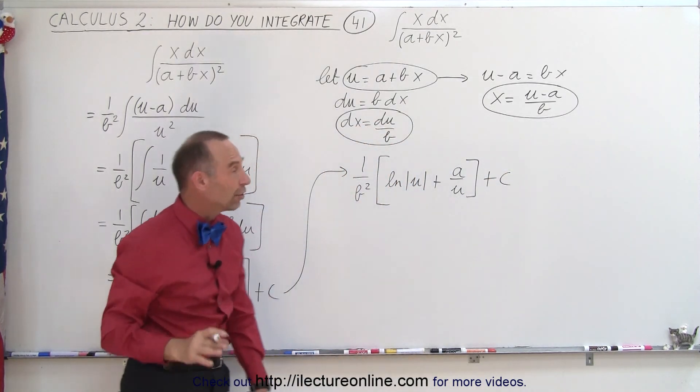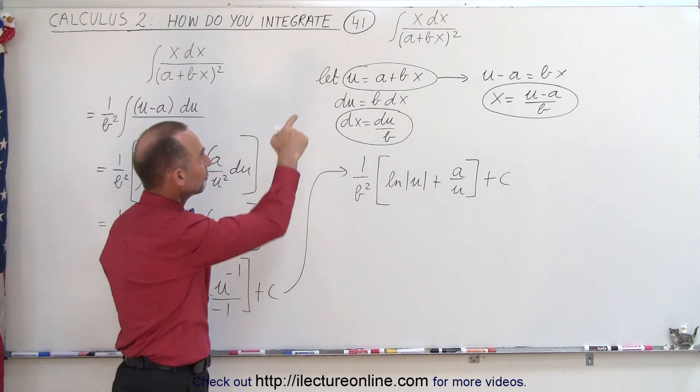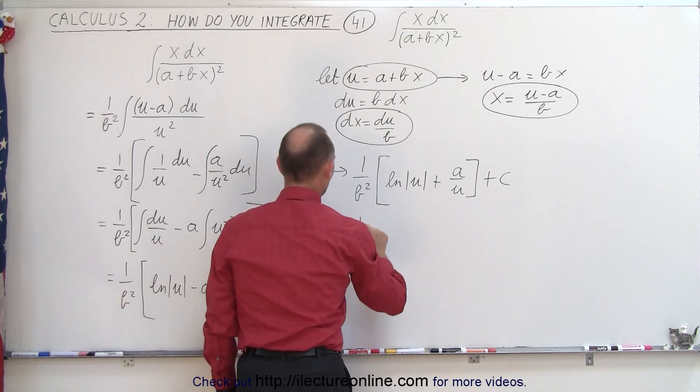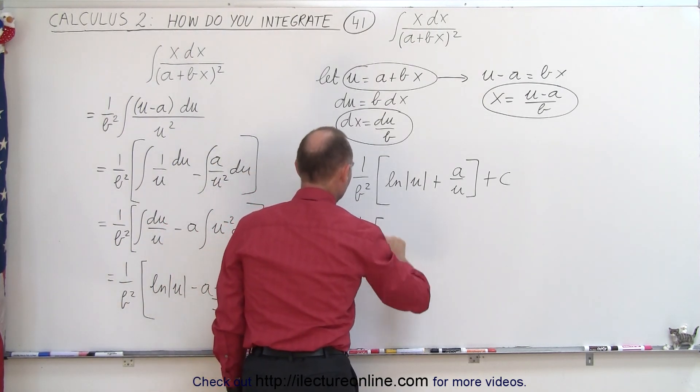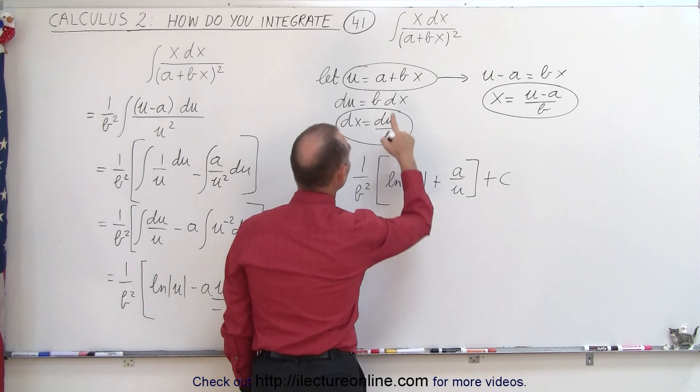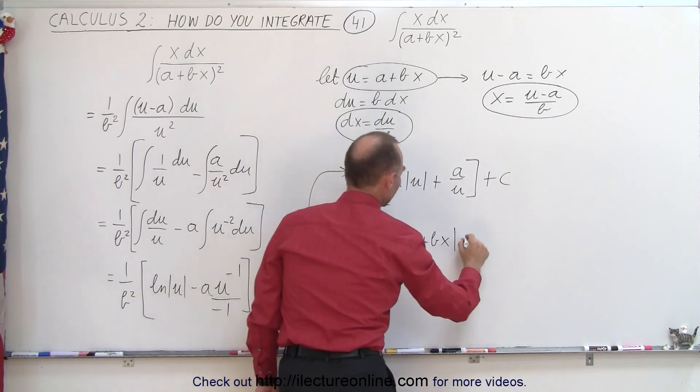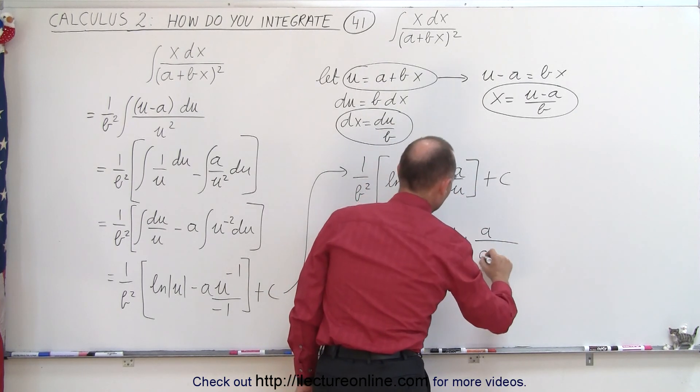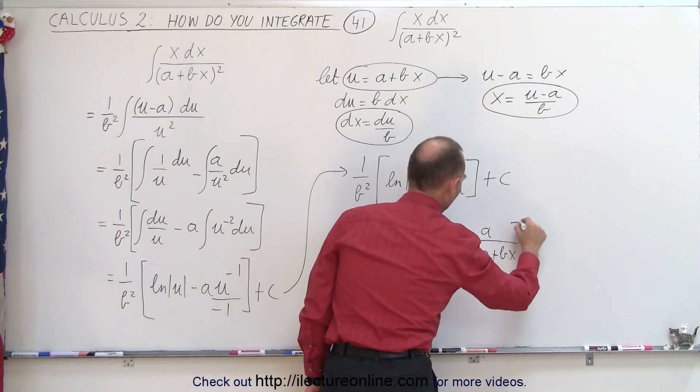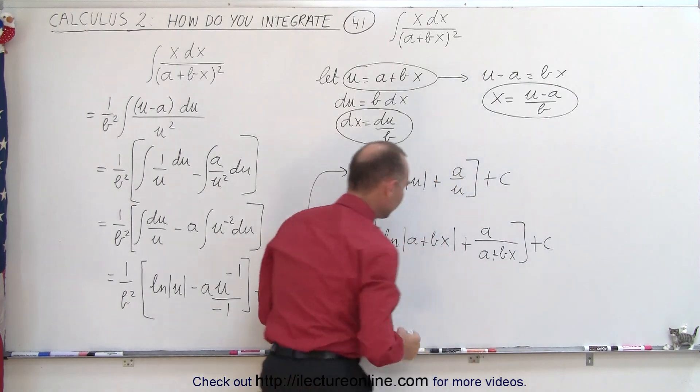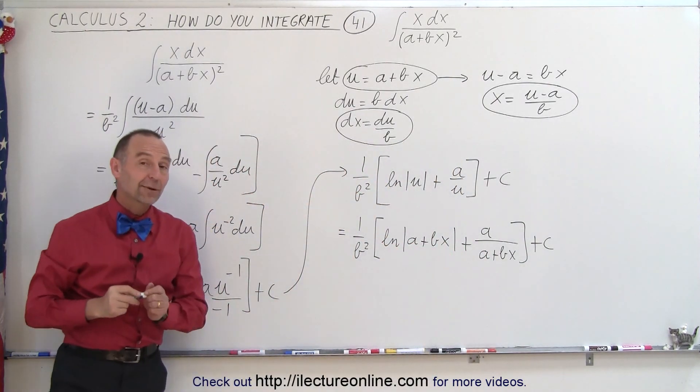All we have left to do is replace what u is equal to and this becomes 1 over b squared times natural log of a plus bx plus a divided by a plus bx and a constant of integration, and that's how we integrate that one.